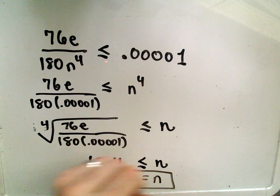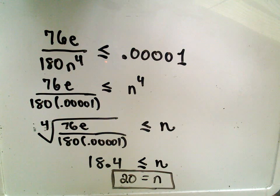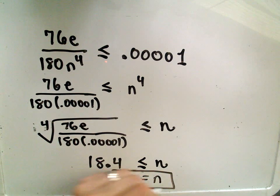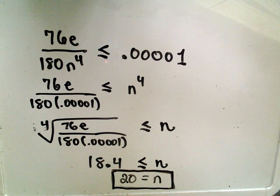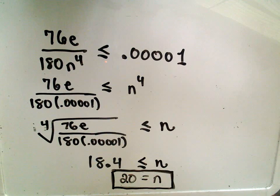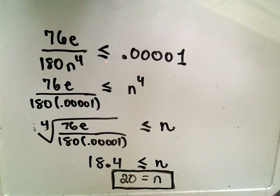So we would have to use at least 20 intervals to calculate that integral to the desired accuracy. Pretty tedious, but nothing too crazy. I hope this example makes sense and my derivatives weren't too long and messy. As always, if you have questions or comments, feel free to post them. Hope this helps, and good luck out there.